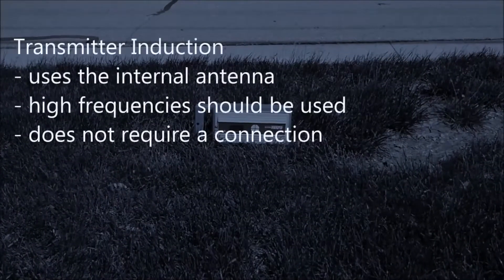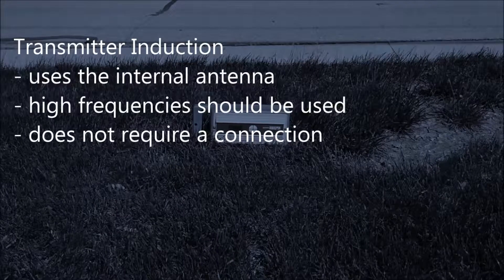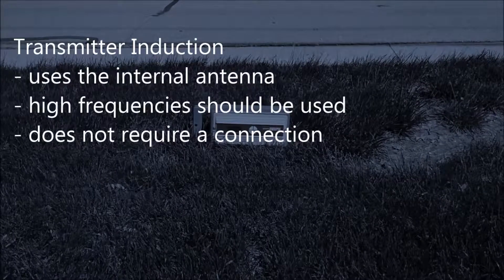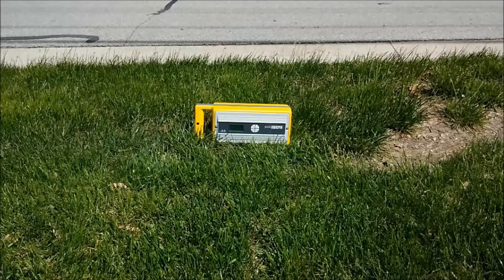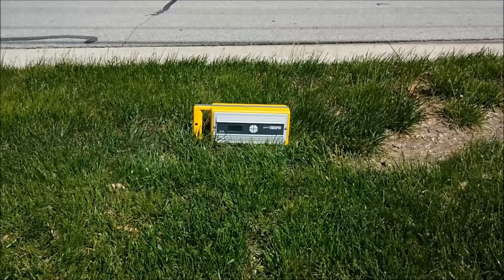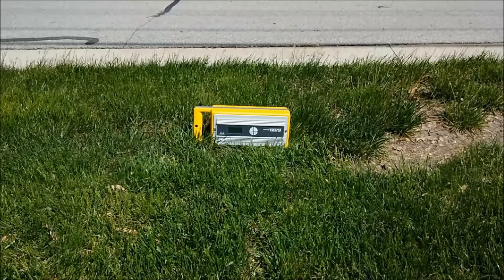Transmitter induction uses an internal antenna to broadcast the locate signal to a buried utility. High frequencies should be used for successful transmitter induction. To induce with the transmitter, place the unit on its side with the long axis in line with the buried utility. Turn the unit on the highest frequency.